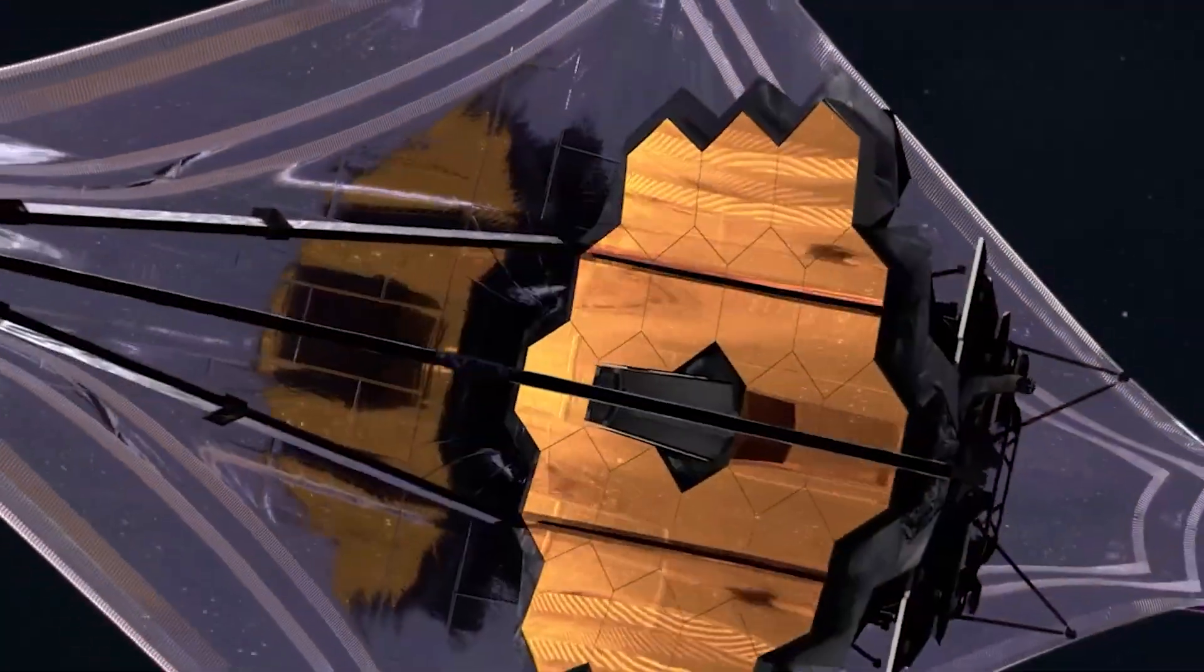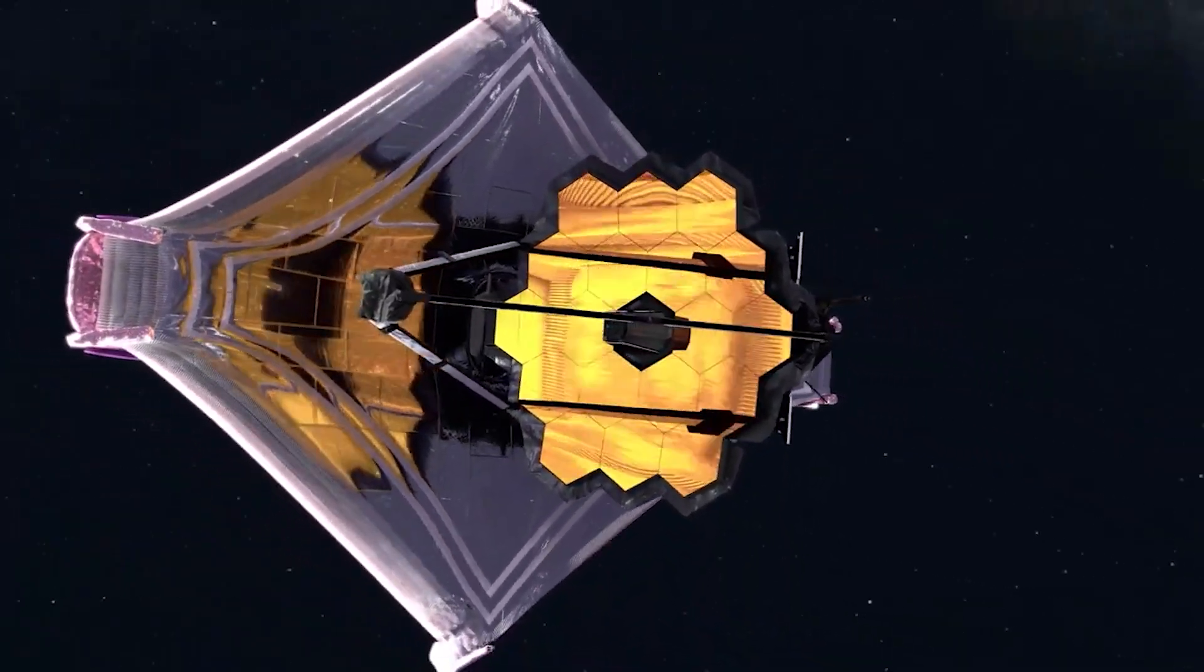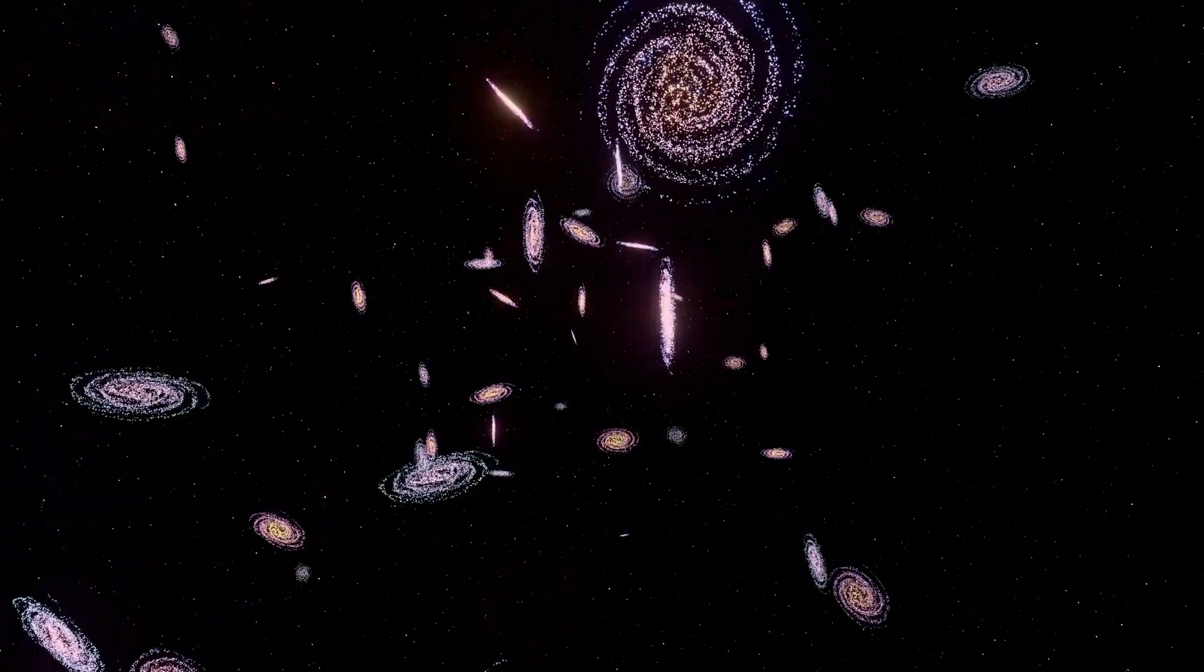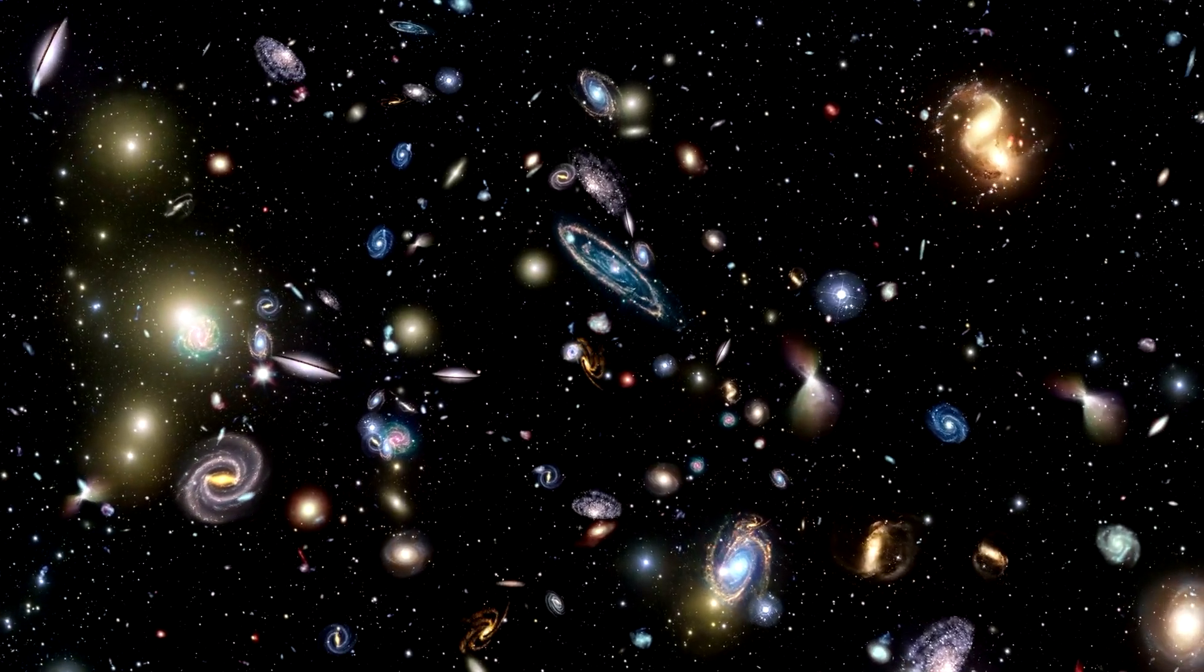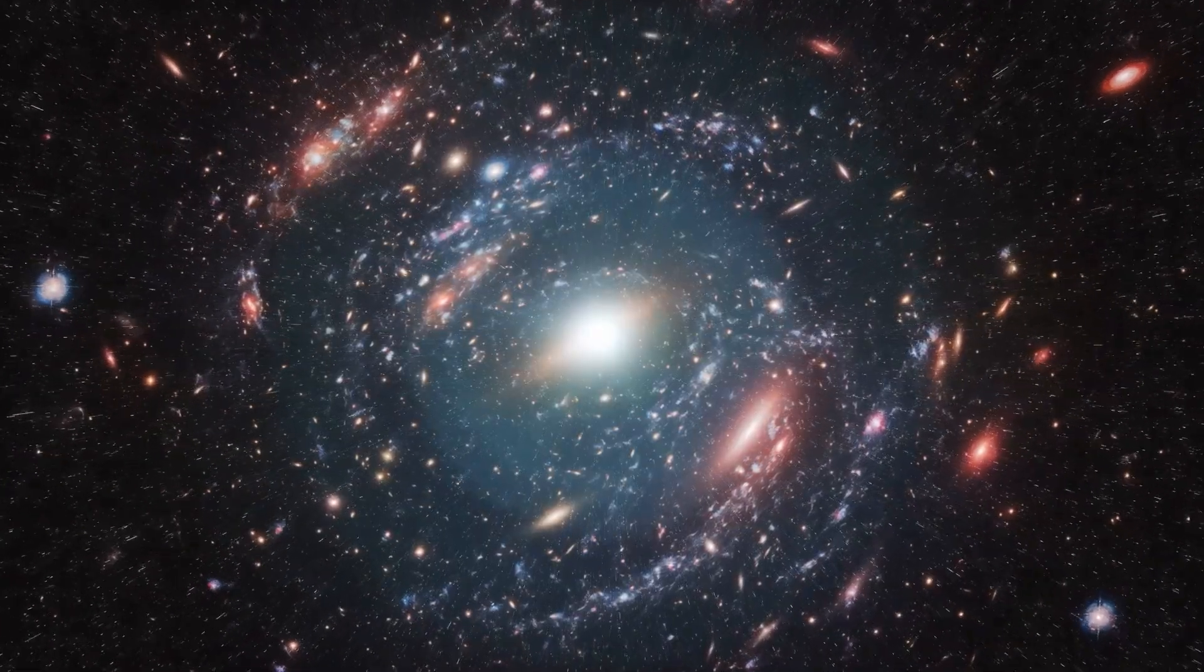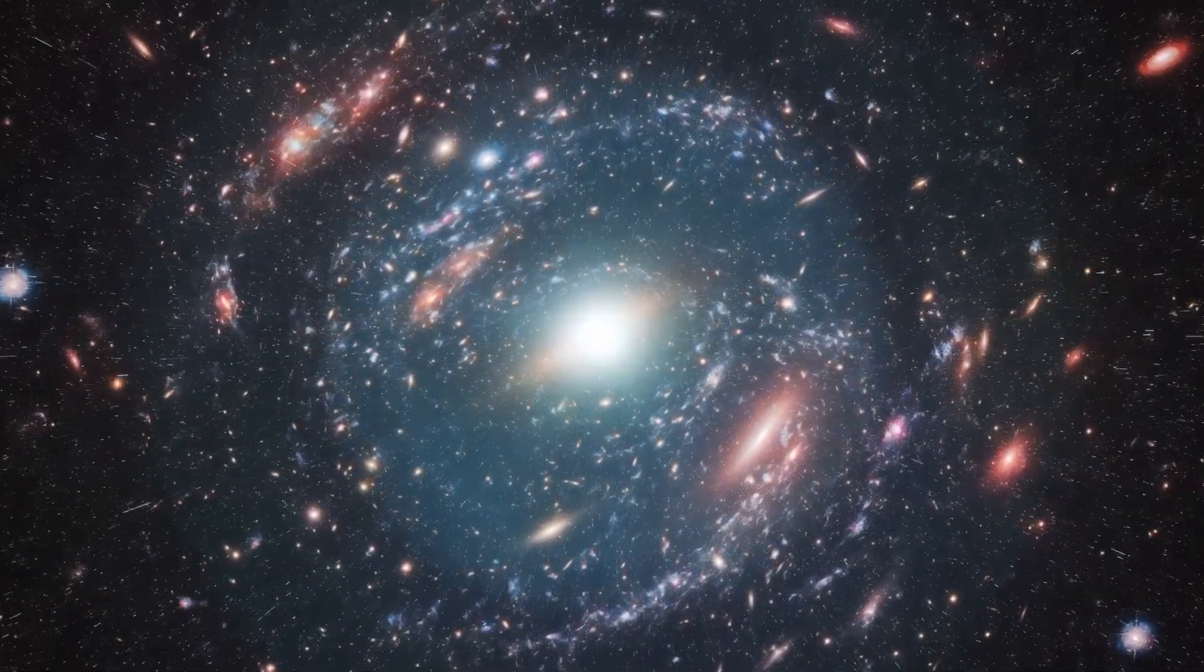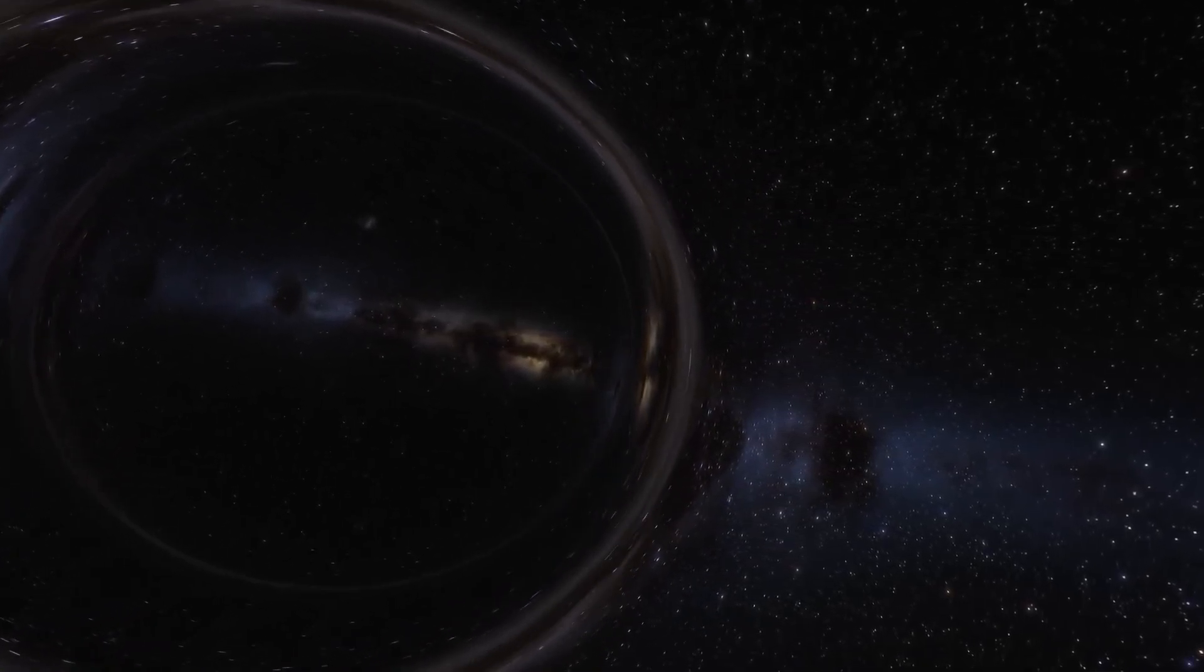The James Webb Space Telescope recently observed something astonishing: galaxies spinning in unusual patterns that seem to defy our traditional understanding of physics. Instead of random orientations, galaxies are spinning in an organized way. Scientists are puzzled because this structure hints at something extraordinary. Our universe might not just be floating in empty space. It might actually exist inside the environment of a rotating black hole.